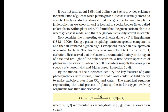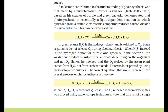By the middle of the 19th century, the key features of plant photosynthesis were known: that plants could use light energy to make carbohydrates from CO2 and water. The empirical equation representing the total process of photosynthesis was understood as: CO2 + H2O → CH2O + O2, where CH2O represents a carbohydrate such as glucose, a 6-carbon sugar.